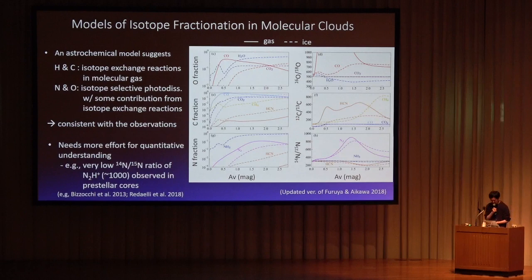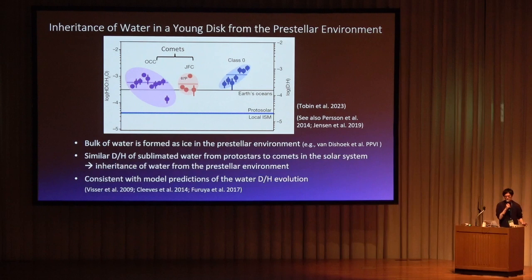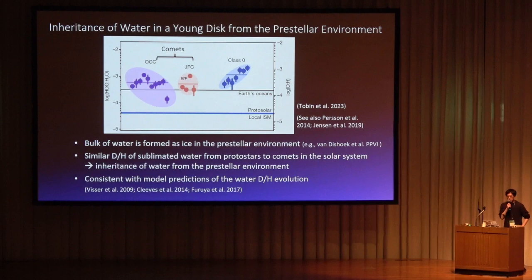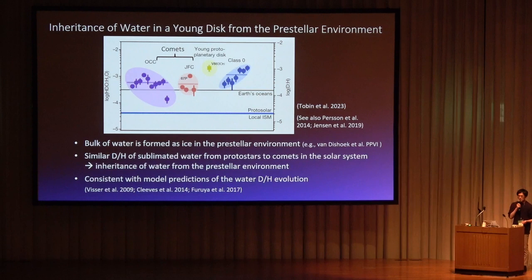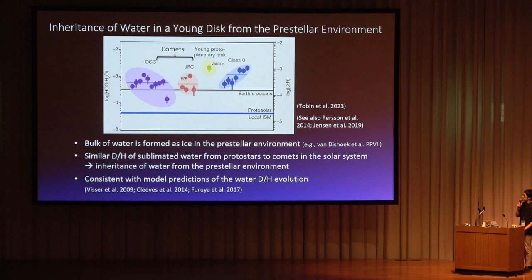Let's discuss water. We already know that the bulk of water is formed as ice in the pre-stellar environment. After protostar formation, the envelope is heated up and water is sublimated into the gas phase in regions where temperature is higher than 100K. We can observe this sublimated water using ALMA and NOEMA and measure its D-to-H ratio. The D-to-H ratio of sublimated water is around 10^-3, which is much higher than the elemental D-to-H ratio. Very recently, water D-to-H inside the water snow line of a disk was measured for the first time in the outbursting source V883 Ori, and the D-to-H ratio was found to be similar to protostar envelopes and comets in our solar system, indicating that water in disks and comets is inherited from pre-stellar stages rather than formed inside disks.